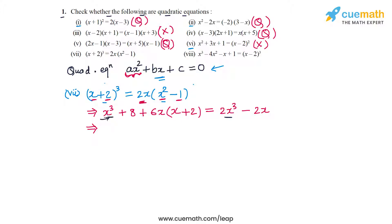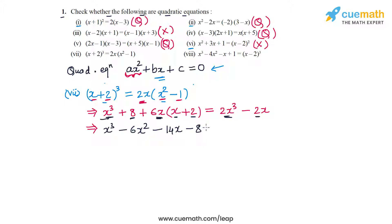After rearranging, we get x³ on the left, then 6x² shifted to the right gives −6x², then 12x on the left and −2x on the right gives −14x, and shifting 8 to the right gives −8. So the equation has an x³ term, and is clearly not a quadratic equation. The equation in part seven is not a quadratic equation.